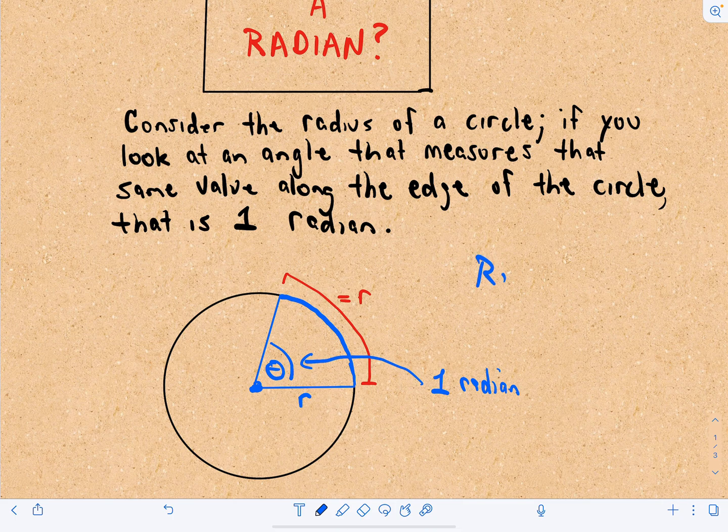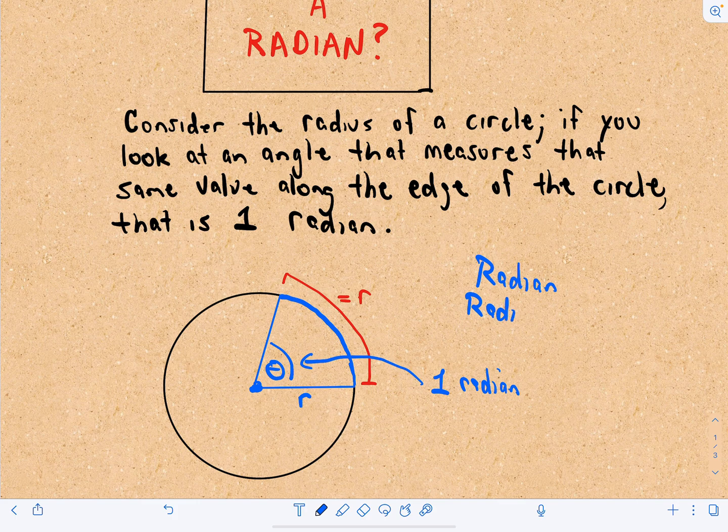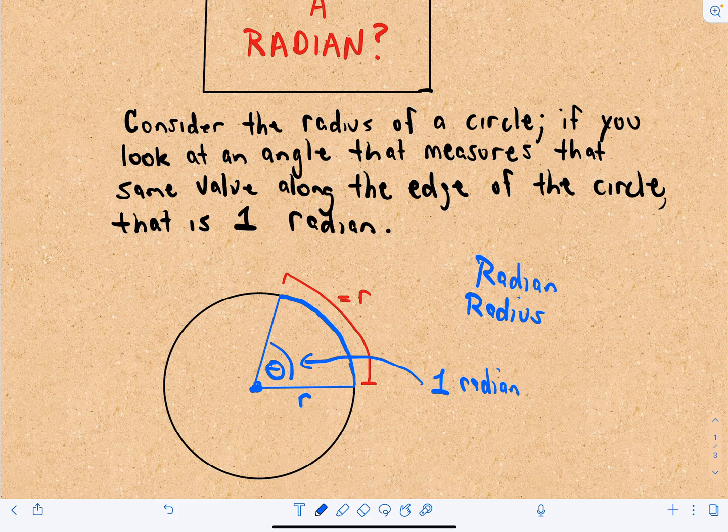And think about it, right? I mean, radian sounds very similar to radius. And that's how I remember it. So, radian and radius. That's what it measures.